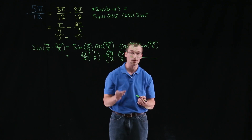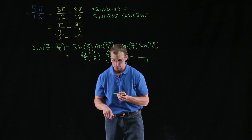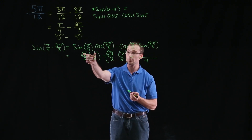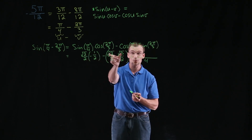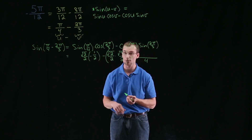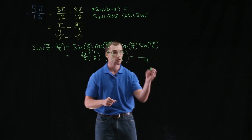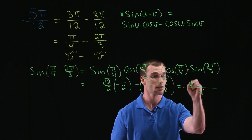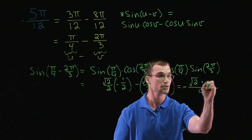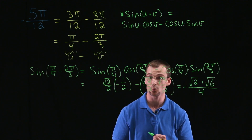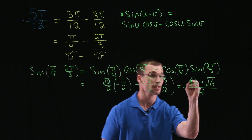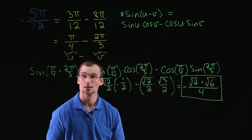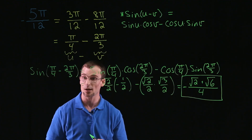Now, we notice if we multiply our denominators, we get a common denominator of 4. And if we multiply the numerators, we'd have negative root 2 minus root 2 times root 3, which can be simplified as the square root of 6. Now, we have two negatives, so what we can do is bring the negative to the outside and have positive root 2 plus root 6 in our numerator. So there's the sine of the angle negative 5 pi over 12.